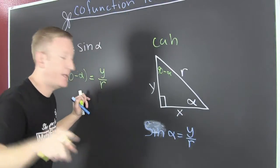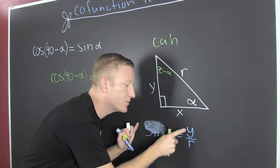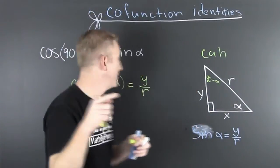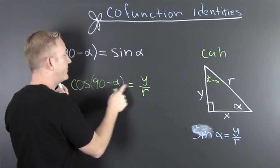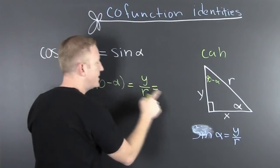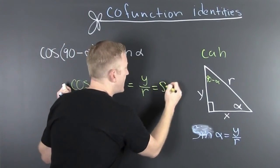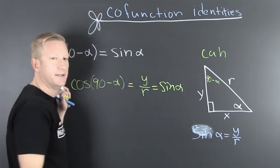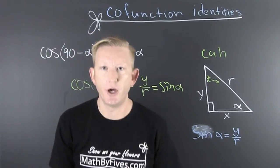So, wait a minute. The sine down here is y over r. And the cosine of 90 minus alpha is y over r. So, it's not so far to suggest that this one is the same as that one. And it has been shown.